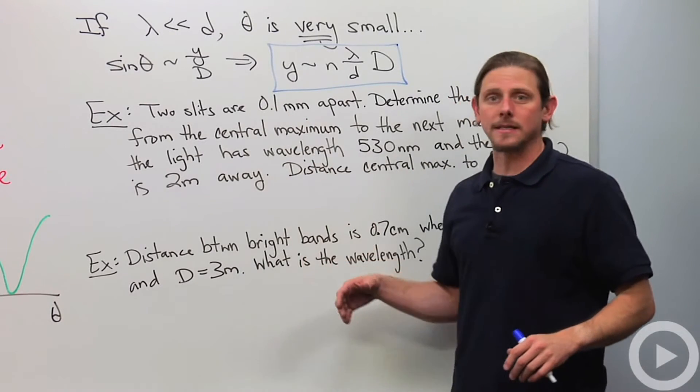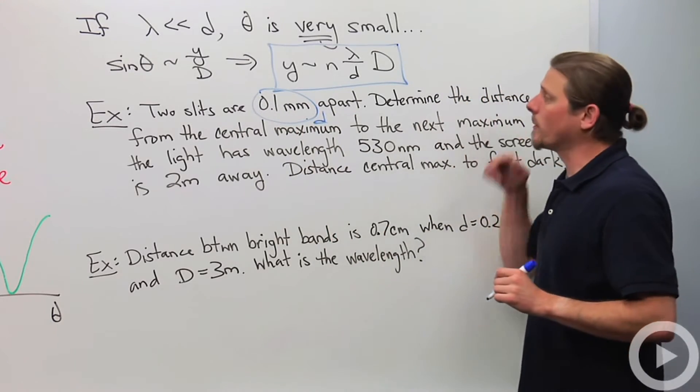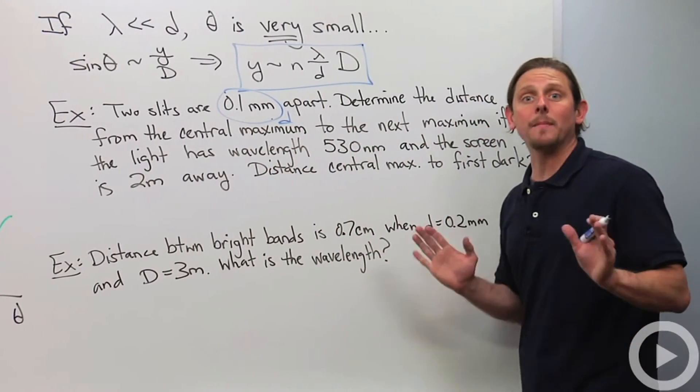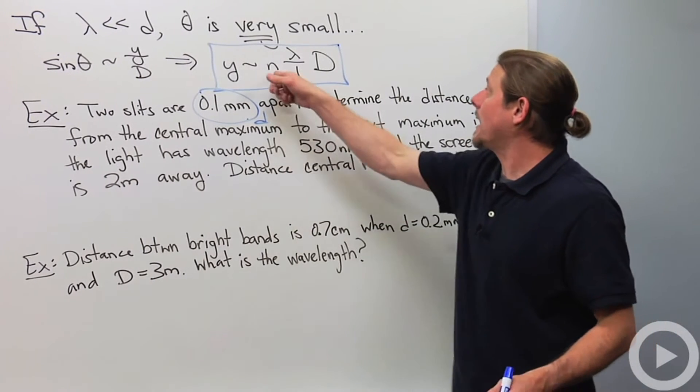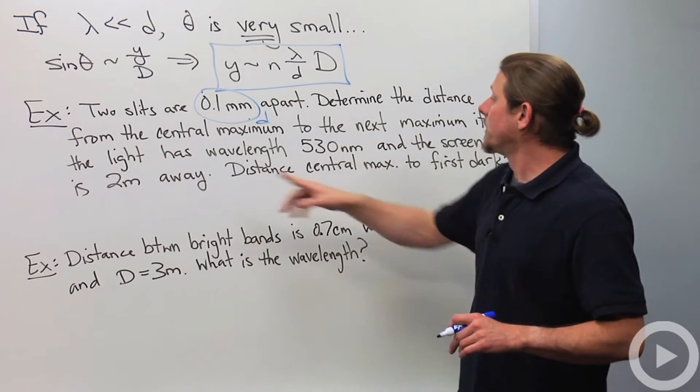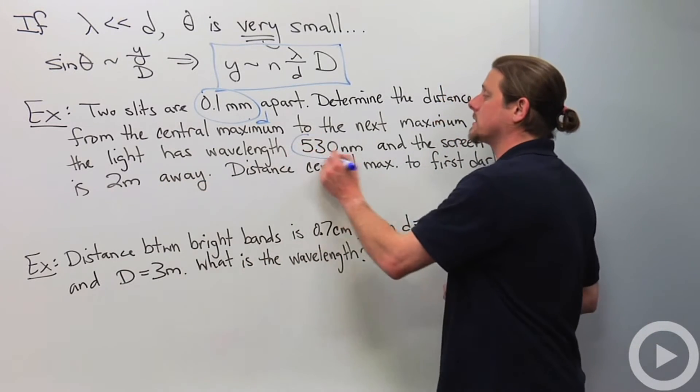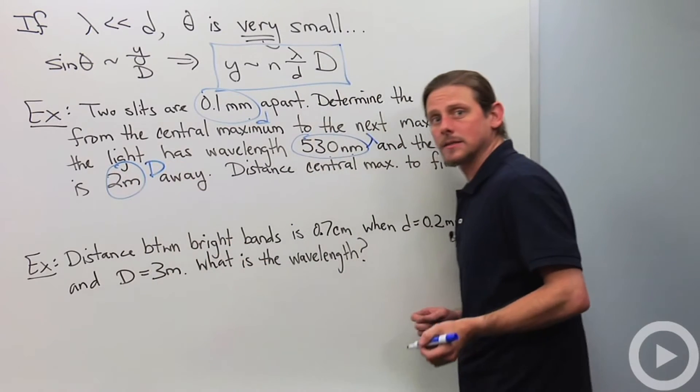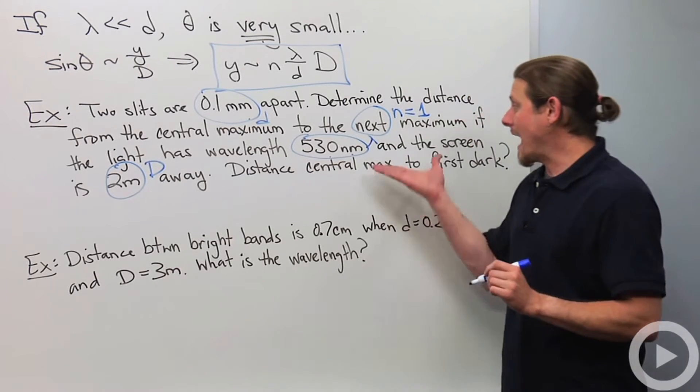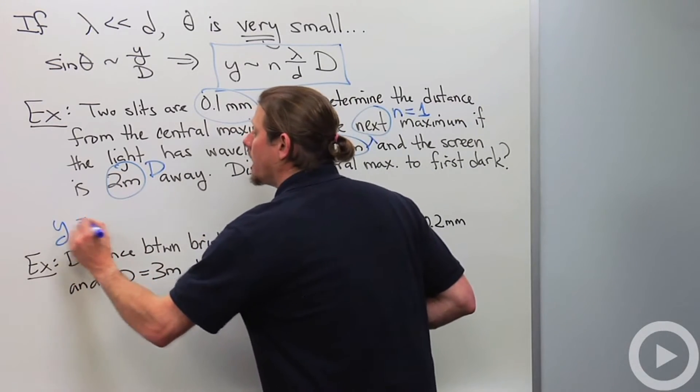So let's go ahead and look at this example. We've got two slits. They're 0.1 millimeters apart, so that's lowercase d. Determine the distance from the central maximum to the next maximum. So that means I'm looking for bright spots. So that means I need n to be an integer, right? So we're going to take n equals one. If the light has wavelength 530 nanometers and the screen is two meters away. So this is my lambda. This is my big distance and the word next here says n equals one. So that's the idea. So all we need to do is determine y. So y equals approximately.